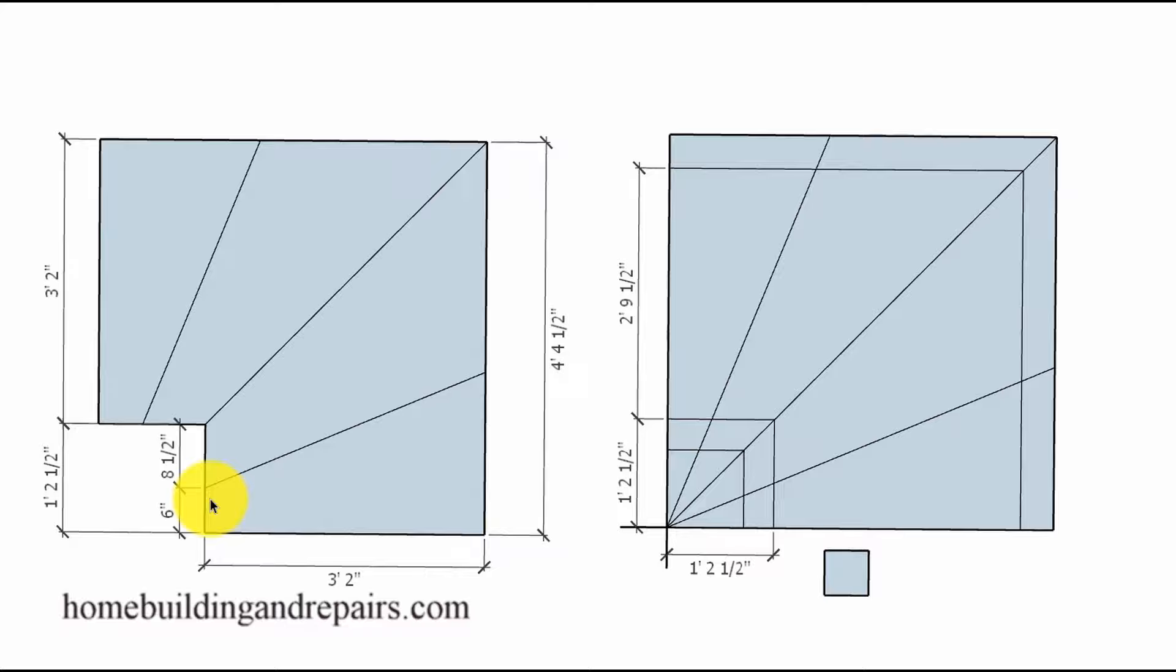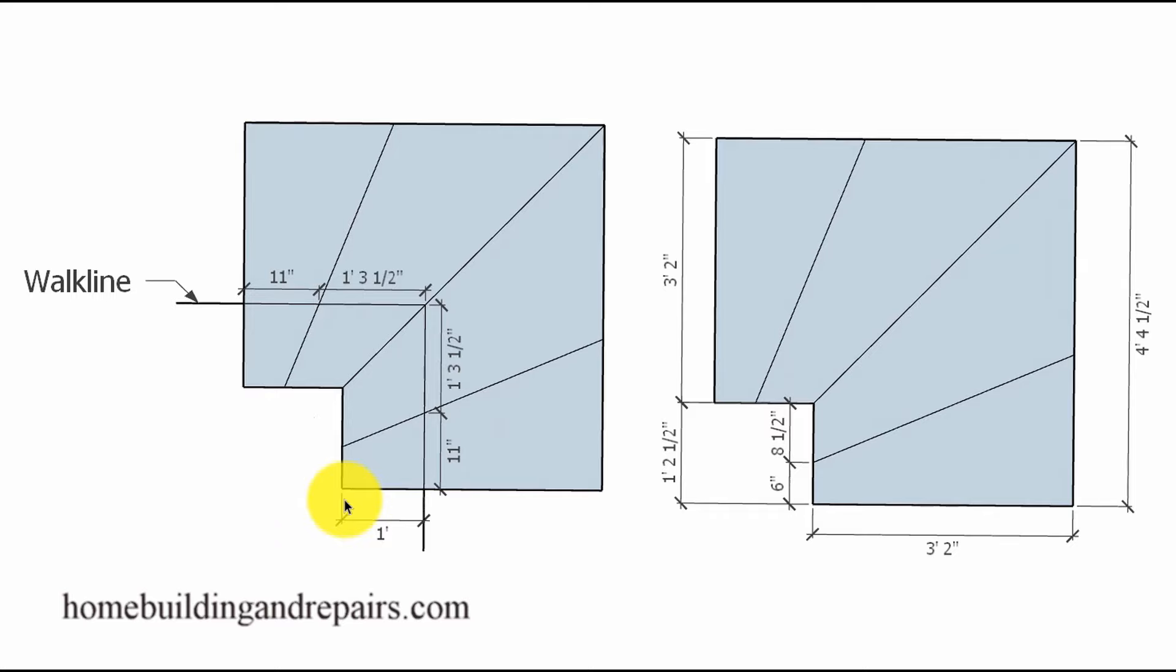That might require a 36 inch minimum width for the stairway, six inch minimum inside tread measurements. And of course we're also going to need to meet another building code requirement. And that will be a walk line that is usually going to be established if we come in one foot from the inside of the stairway.